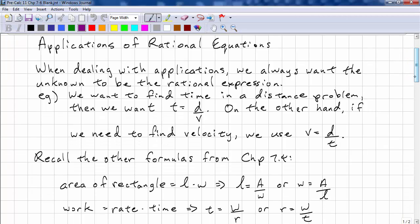For example, we want to find time in a distance problem. Then we want t equals d over v. So this is our rational expression. On the other hand, if we need to find velocity, then we use v is equal to d over t. So this is our rational expression.